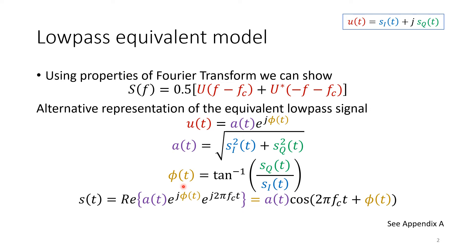So a signal s(t) can be represented in its Cartesian lowpass equivalent complex form, or we can have the polar representation where a signal is made of amplitude and phase.